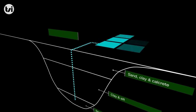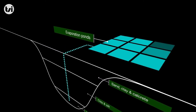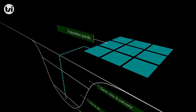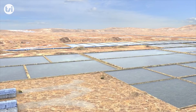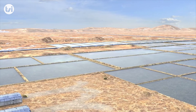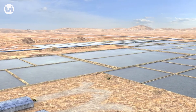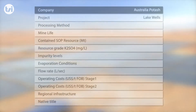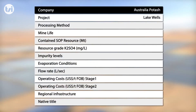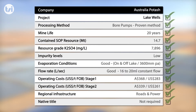The other common method is brine extraction, and this is how Australian Potash plans to produce SOP at their Lake Wells project. For this method to be considered, the project requires a number of unique characteristics. Fortunately, the Lake Wells project more than meets all of these essential characteristics.